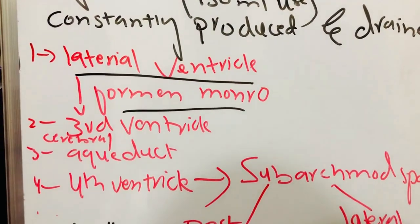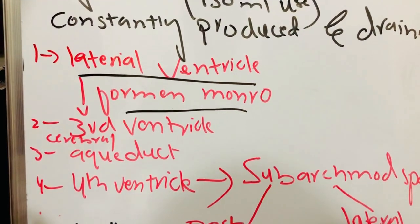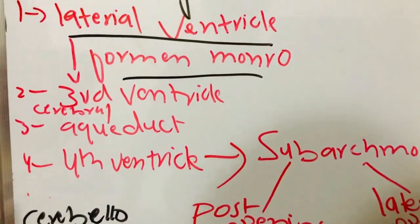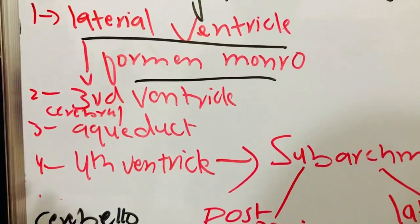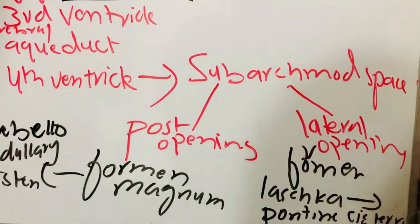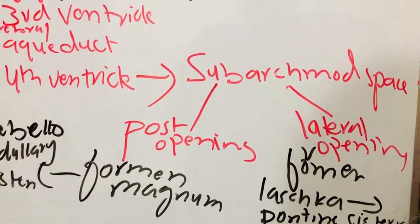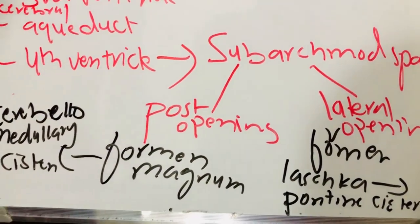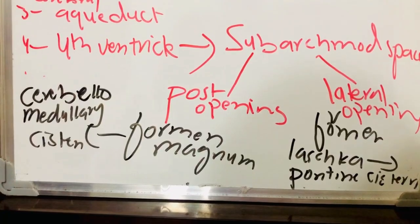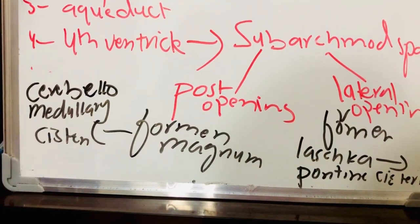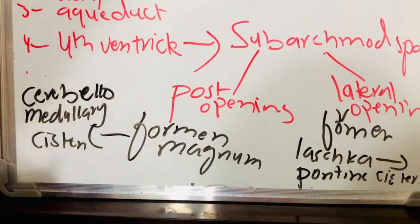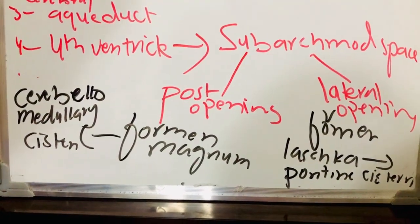The CSF moves from the lateral ventricle to the third ventricle, from the third ventricle it goes to the cerebral aqueduct, from the cerebral aqueduct it goes into the fourth ventricle, and from the fourth ventricle it moves into the subarachnoid space in two portions. From the posterior opening it goes into the foramen magnum and into the cerebromedullary system. From the lateral opening it goes to the foramen of Luschka and into the cerebellopontine system. Thanks guys for watching.